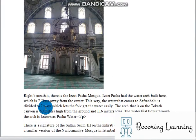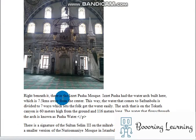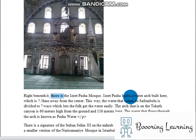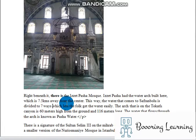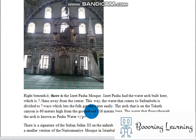Let's emphasize the form of there is in that paragraph. Izzet Pasha had the water arch built, which is seven and a half kilometers away from the center. This way, the water that comes to Safranbolu is divided into seven ways, which lets the folk get the water easily. The arch that is on the Tokatlı Canyon is 60 meters high from the ground and 116 meters long. The water that flows through the arch is known as Pasha Water.